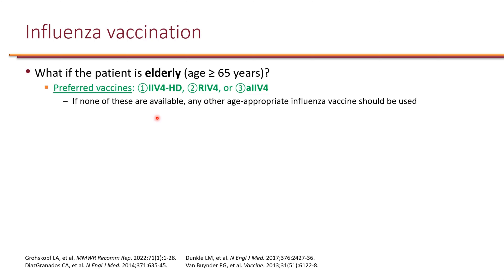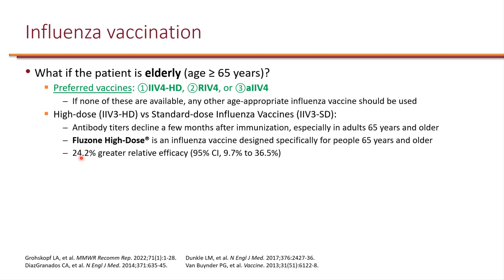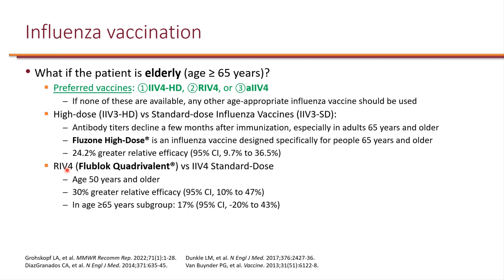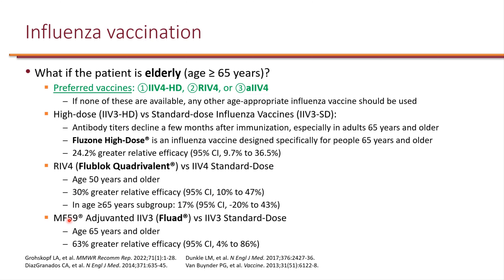Any opportunity to vaccinate individuals is very important. The reason these three are preferred is that the high dose was studied against the standard dose in randomized controlled trials using trivalent vaccines, and the high dose was superior — about 24% greater relative efficacy. Recombinant compared to standard dose also showed higher efficacy in elderly — about 30% greater relative efficacy. The adjuvanted Fluad uses MF59 as an adjuvant to increase immunogenicity, showing about 63% greater relative efficacy. This concludes the presentation.